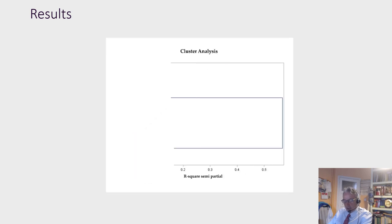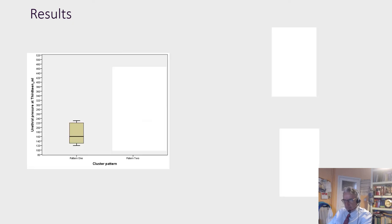Cluster analysis defined two patterns: pattern 1 consisting of 6 patients and pattern 2 consisting of 3 patients. Patients in pattern 1 had compliant urethral pressure and mild to moderate incontinence on the pad test.